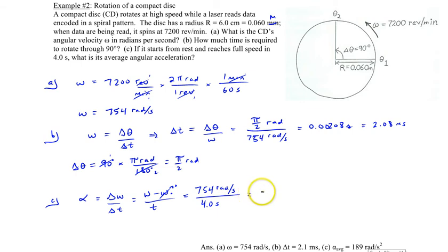The final angular velocity is 754 radians per second over 4 seconds. Calculating this gives 188.4955, which I'll round to 189 radians per second squared. That's it for example number 2.